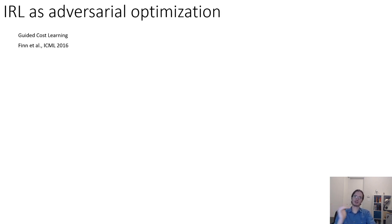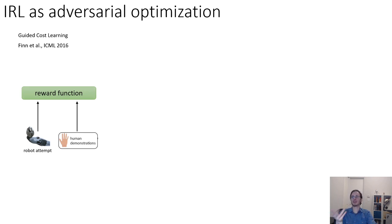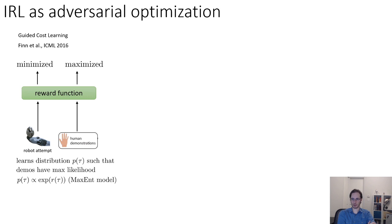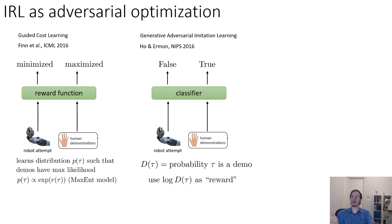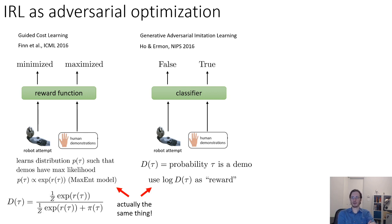To summarize, we can cast IRL as adversarial imitation. In classic deep IRL methods like guided cost learning, the policy attempts to match human demonstrations, the reward function minimizes reward of policy samples and maximizes reward of human demonstrations, and it learns the distribution p of tau such that the demos have maximum likelihood. The generative adversarial imitation learning approach instead uses a classifier which assigns 'false' to all policy samples and 'true' to all human demonstrations, where D of tau is the probability that tau is a demo, and you use log D of tau as your reward. They're basically the same thing, except one recovers a reward function and the other recovers the policy but not the reward. The difference is that the discriminator for guided cost learning and other IRL methods has this particular special form, whereas for GAIL the discriminator is just a binary classifier.